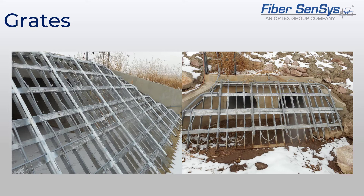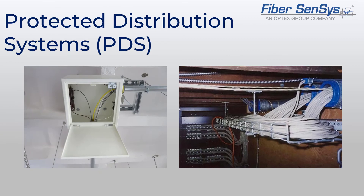Securing the perimeter often involves more than just the fence. Some sites, such as water treatment facilities, have culverts or pipes that could allow access. These entrances tend to have large metal grates to prevent intrusion and must also be protected. Grates are basically fence panels fixed into a foundation, by which FiberSensys products have found success in protecting culverts.